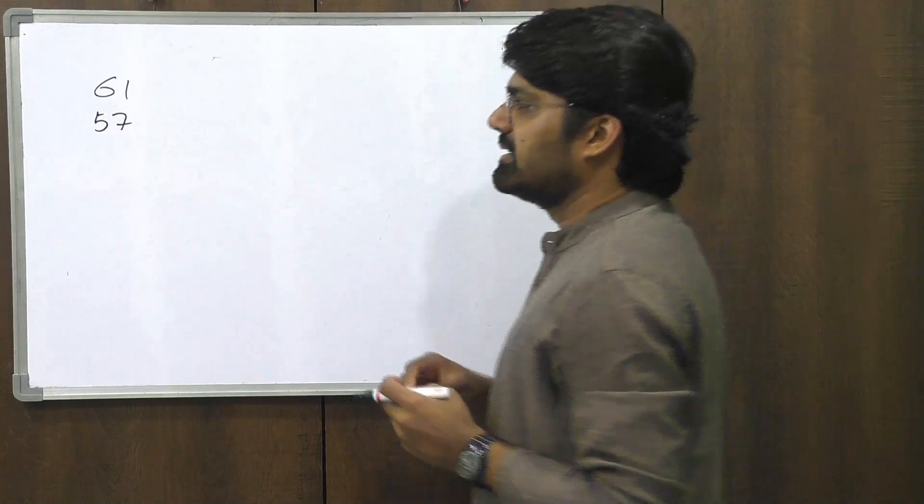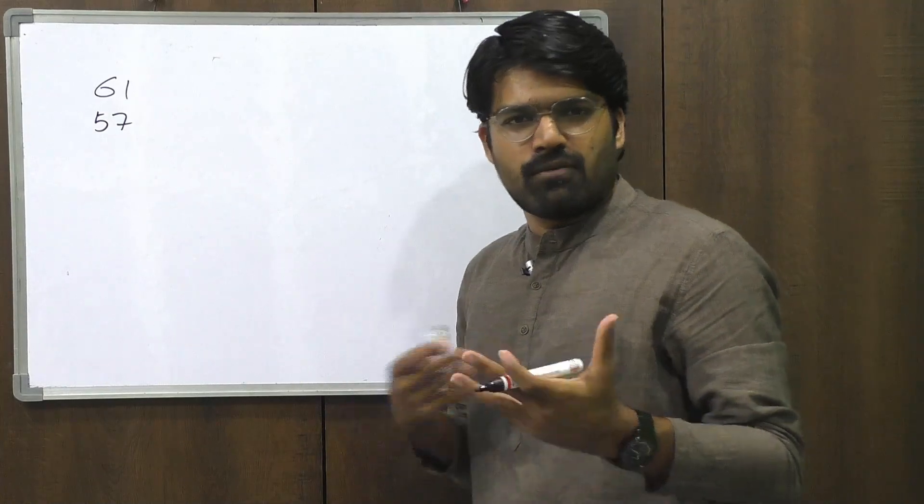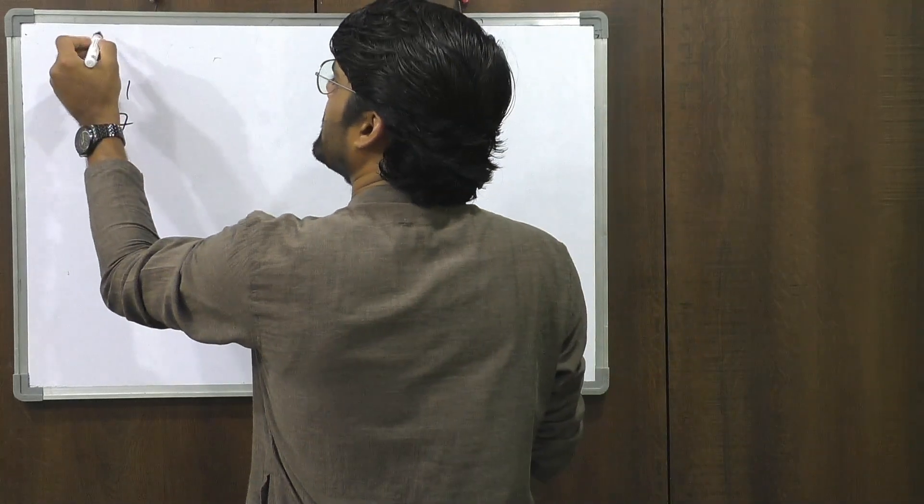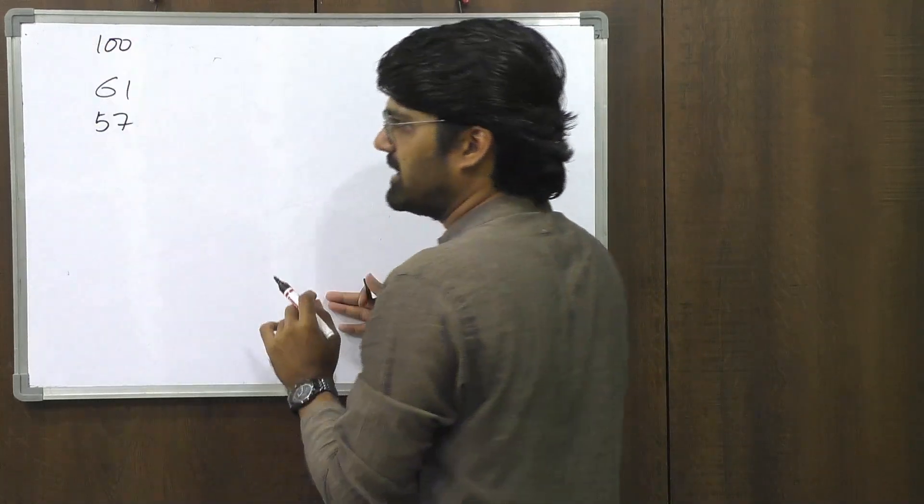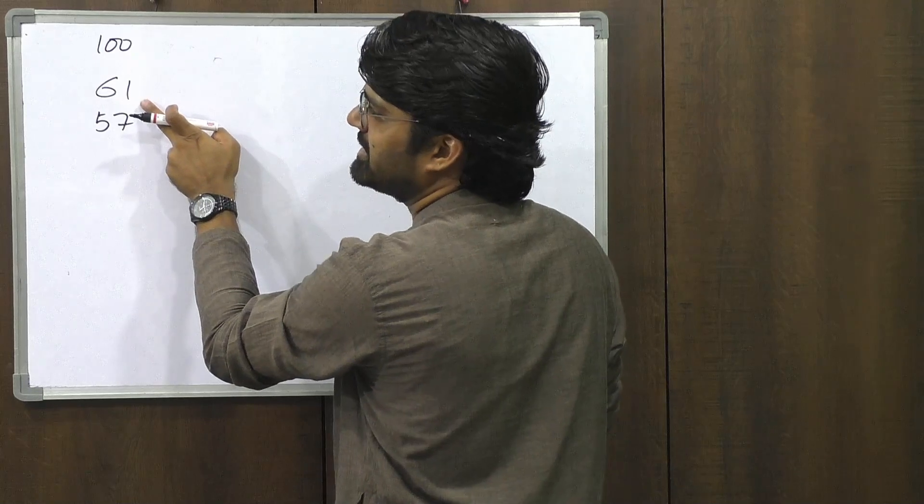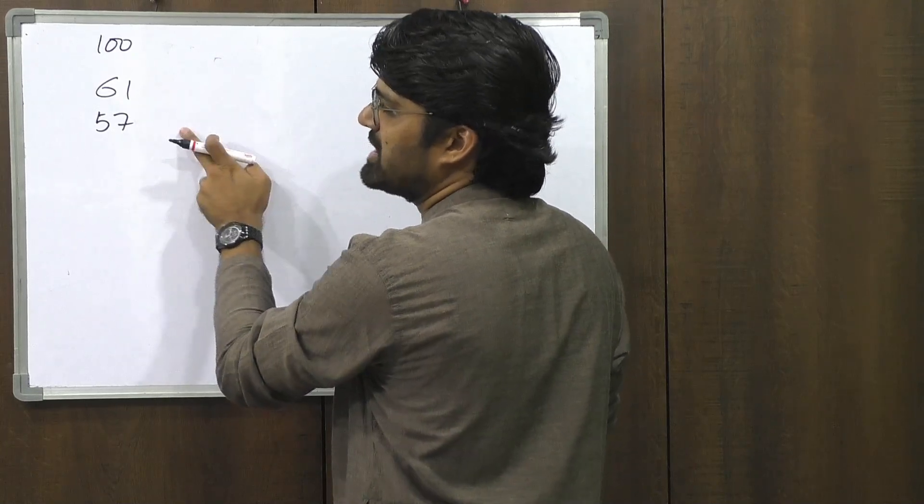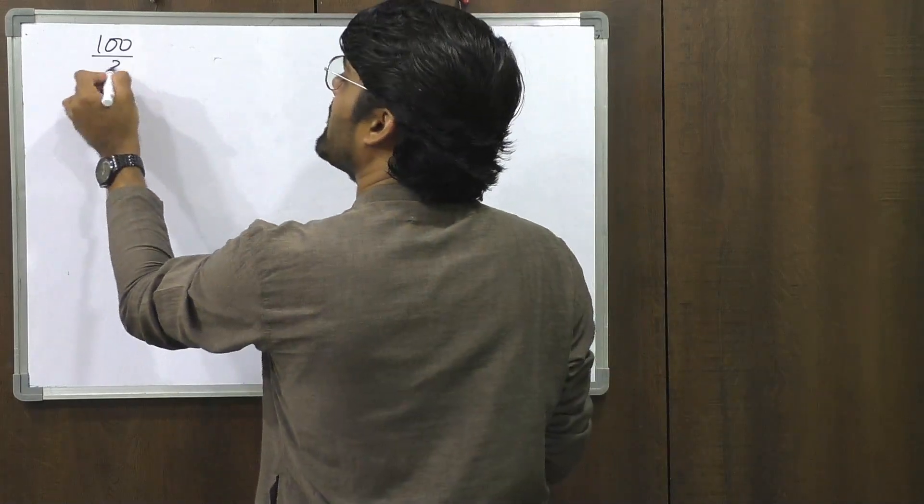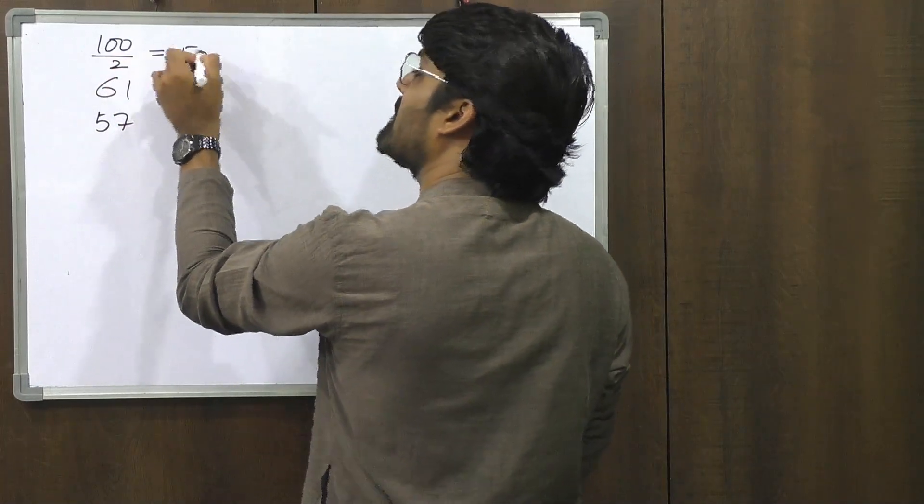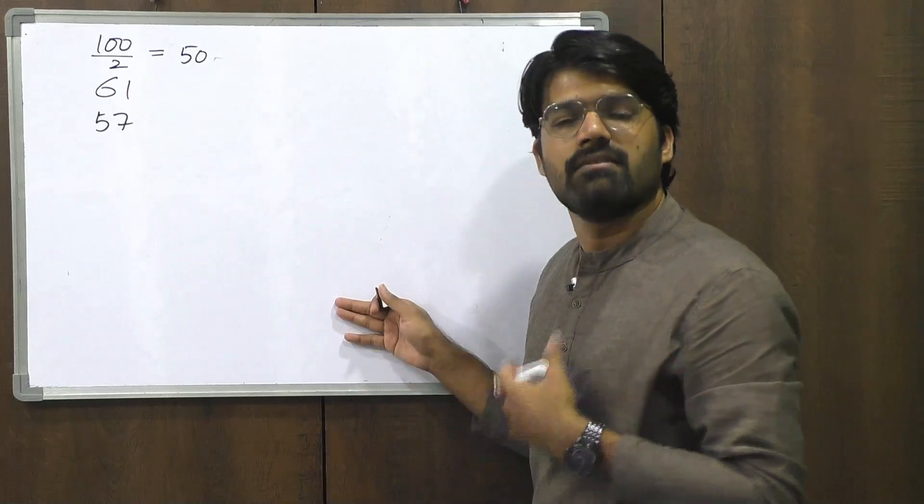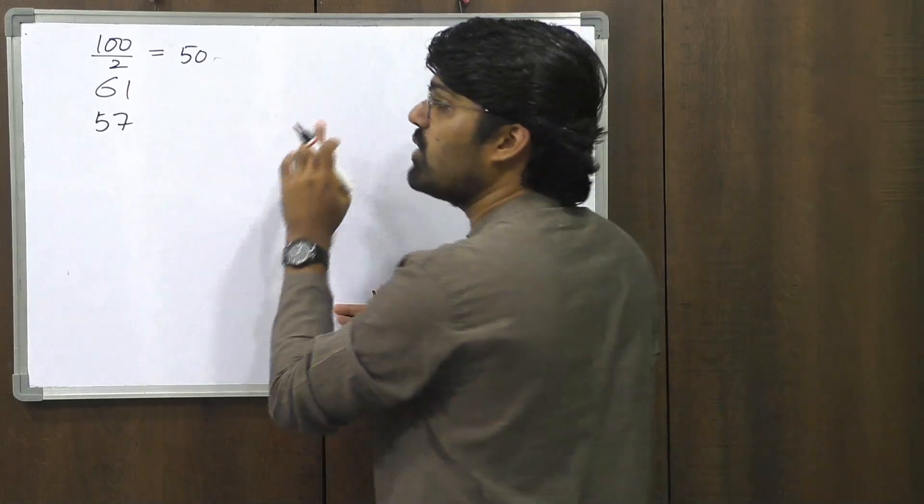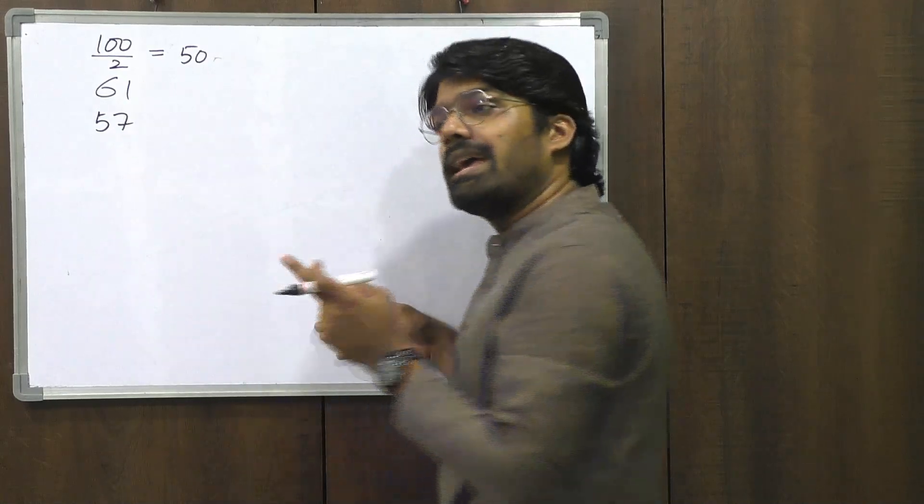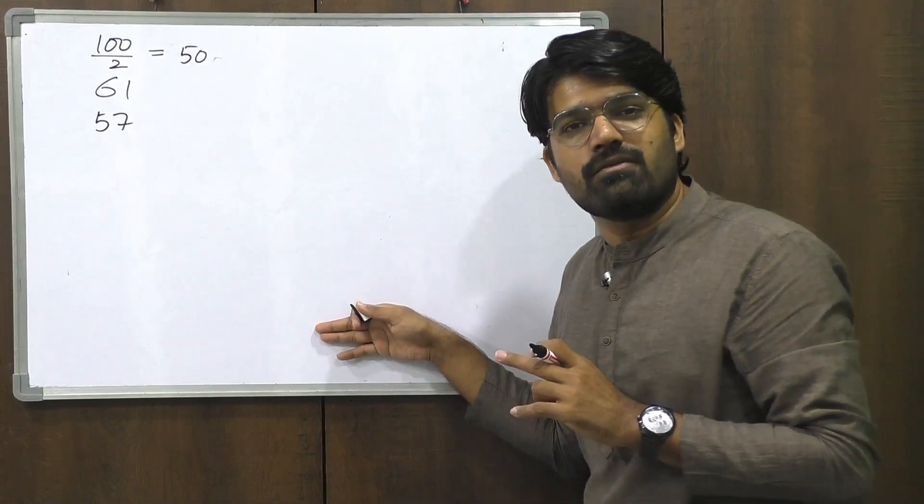Now what happens here? Part 1, part 2 of the Nikhilam Sutra does not apply. What do we do? Now think about this. Usually we consider the base to be 100, but if I go by 100 this is a minus 39 and this is a minus 43, too complex. Let me divide 100 by 2. What happens if you take 100 by 2? Let's assume that our working base is 50. We are assuming that the base is 50. So now if you compare the numbers 61 and 57 with the working base 50 and apply the same fundamentals of Nikhilam Sutra.